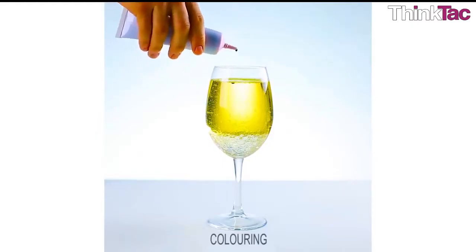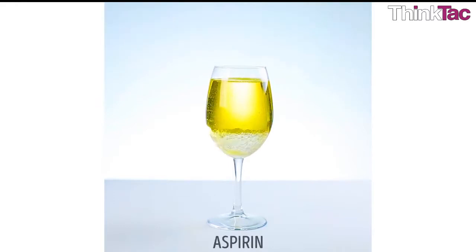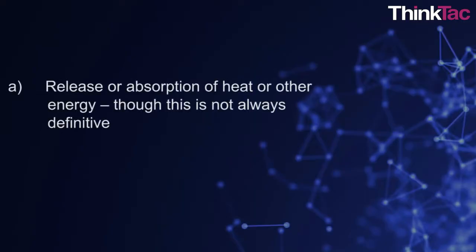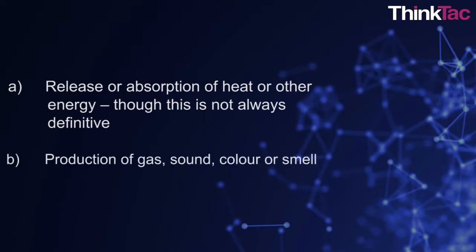Some ways to identify a chemical change are release or absorption of heat or other energy, though this is not always definitive as we've talked about in dissolving salts. A production of a gas, sound, colour or smell usually involves a chemical change.